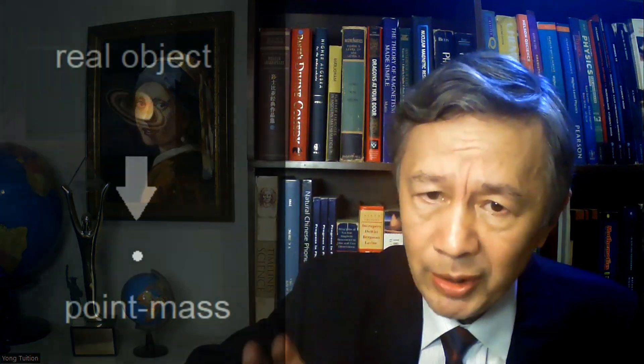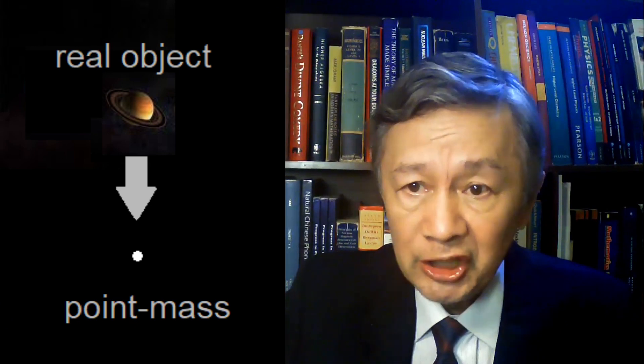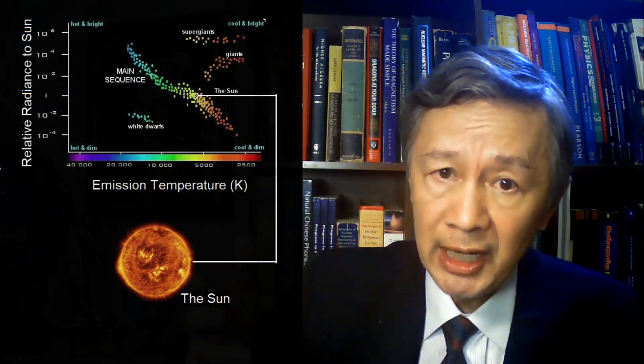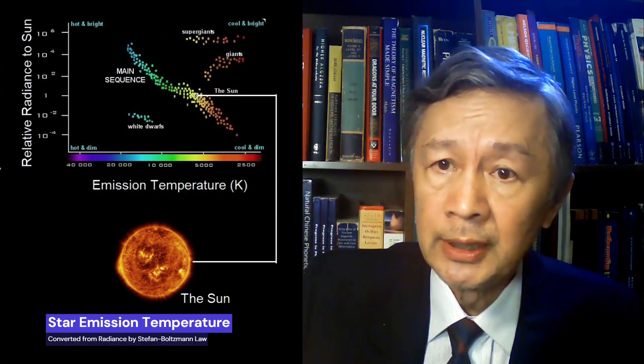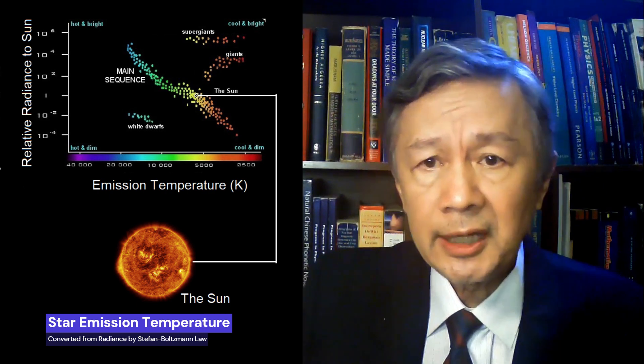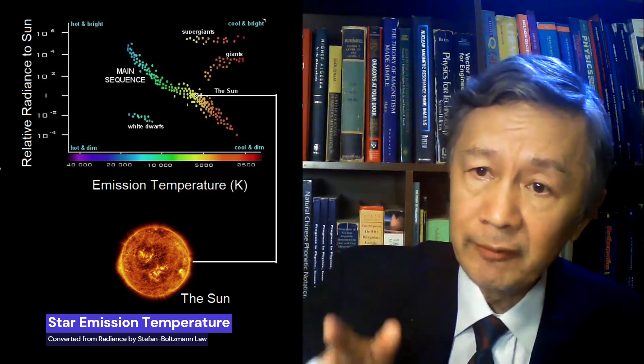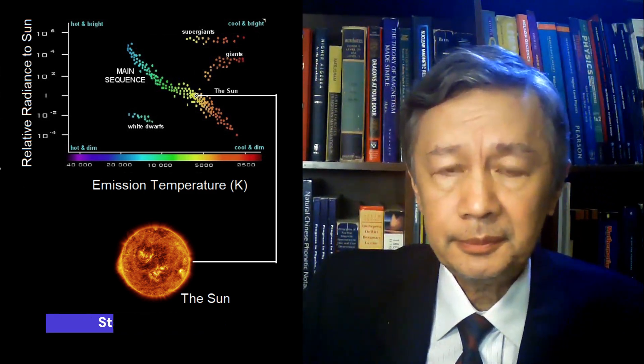If an object is far away, one may treat it as a point mass — a mathematical point — in doing so, all details of that object are omitted. For example, when the radiation intensity of a remote star is measured and converted into emission temperature by the Stefan-Boltzmann law, it is impossible to work out the vertical distribution of its actual temperature profile from this single-value emission temperature. Therefore, it is conceptually wrong to consider the equivalent emission temperature of the Earth, 255 Kelvin, as the same as the kinetic atmospheric temperature at a 5 kilometer altitude.